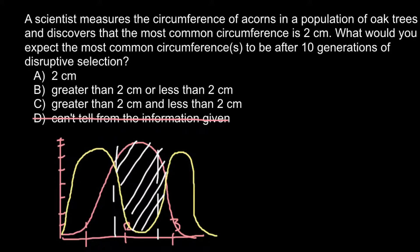So this is what we have when we have disruptive selection. The correct answer would be Answer C.